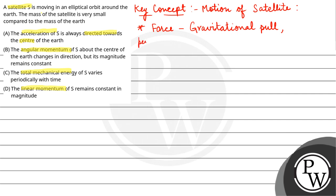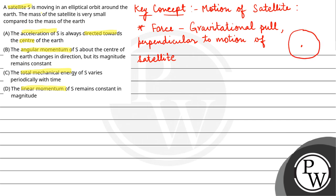This gravitational force is perpendicular to the motion of the satellite. So, work done will be 0. And since work done is 0, that means your energy is constant.